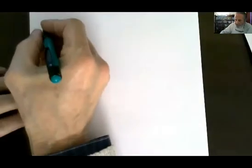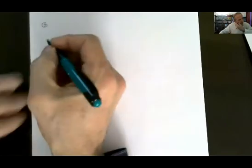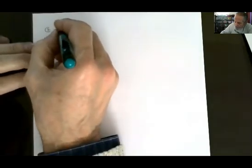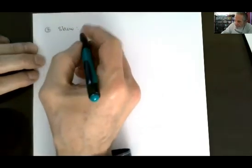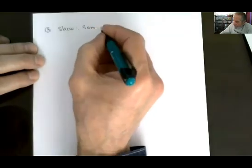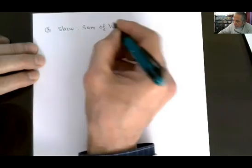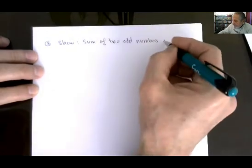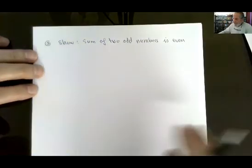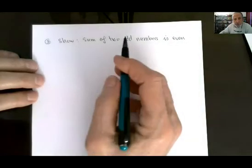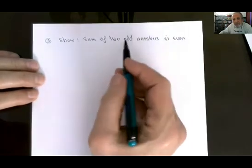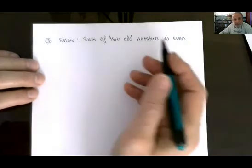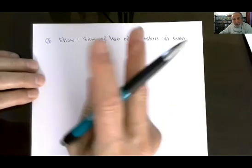Let's take another example, example number 3. Show that the sum of two odd numbers is even. Again, you need to understand what you're trying to do. If I'm adding any two odd numbers, I should get an even number. So I tried 5 plus 7: 12 is fine. Take 9 plus 7, you get 16, which is even. So we're going to try to prove this for any two odd numbers — you add them, you get an even number.